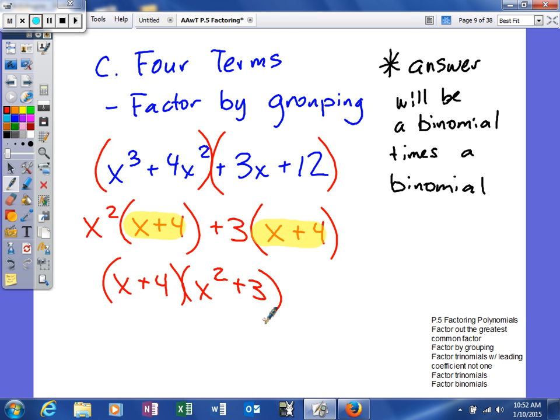All right. So we've completed factoring by grouping. So as you can see, we have a binomial times a binomial. There's no way this could be the answer because it's not a binomial times a binomial. And we could always check our work. This times this is this. This times this is this. This times this is this. And this times this is this. So it checks.